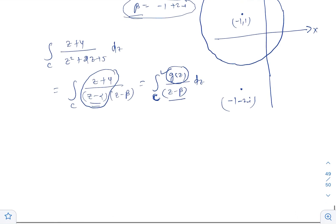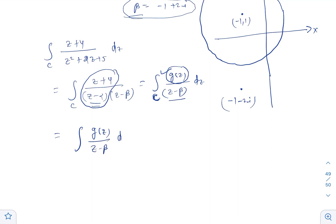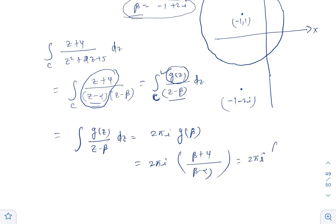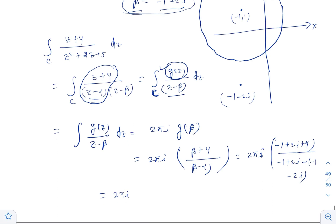By Cauchy's integral formula, the integral of g(z)/(z minus beta) dz equals 2 pi i times g(beta). Now g(beta) equals (beta plus 4)/(beta minus alpha). Substituting beta equals minus 1 plus 2i: the numerator is minus 1 plus 2i plus 4 equals 3 plus 2i. The denominator is (minus 1 plus 2i) minus (minus 1 minus 2i). So the integral equals 2 pi i times (3 plus 2i) divided by 4i.